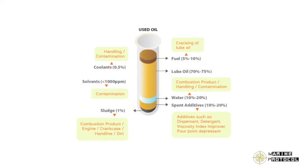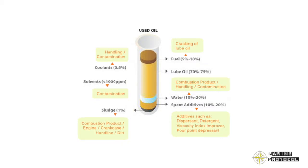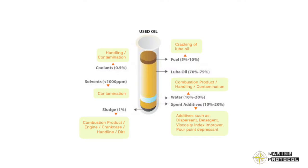Causes of water contamination in lube oil: condensation of water vapor within the crankcase; leakage from the cooling water system, full cylinder, or piston; leakage from sump tank heating steam coils. Effects include: reduced cooling efficiency, increased acid formation in trunk-type piston engines, corrosion of engine parts, microbial degradation, reduced load carrying capacity, and reduced lube oil properties including TBN.